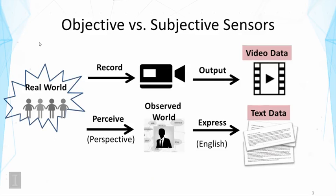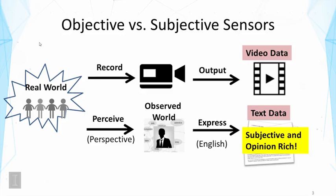Text data can be regarded as data generated from humans as subjective senses. In contrast, we have other devices such as video recorders that can report what's happening in the real world objectively to generate video data. The main difference between text data and other data like video data is that it has rich opinions, and the content tends to be subjective because it's generated from humans. This is actually a unique advantage of text data, because it offers a great opportunity to understand the observers.